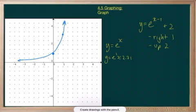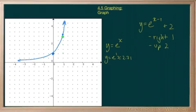We'll use our points, and in particular this point right here at (0, 1). We go right 1, up 2, landing at (1, 3). This point at 2.71 doesn't have enough room, but shifting left 1 and up 2 would put us up here somewhere.